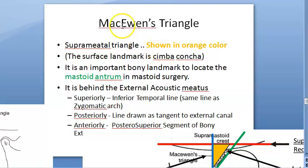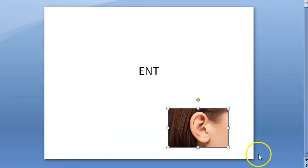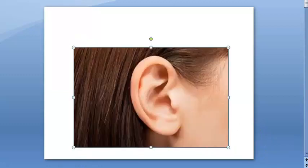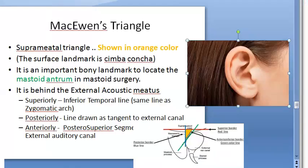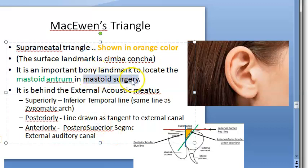Hello everyone. Let us look at McEwen's triangle. We are looking at the ear and trying to understand what McEwen's triangle is, also called the suprameatal triangle. McEwen's triangle or suprameatal triangle is an important bony landmark used in mastoid surgery.